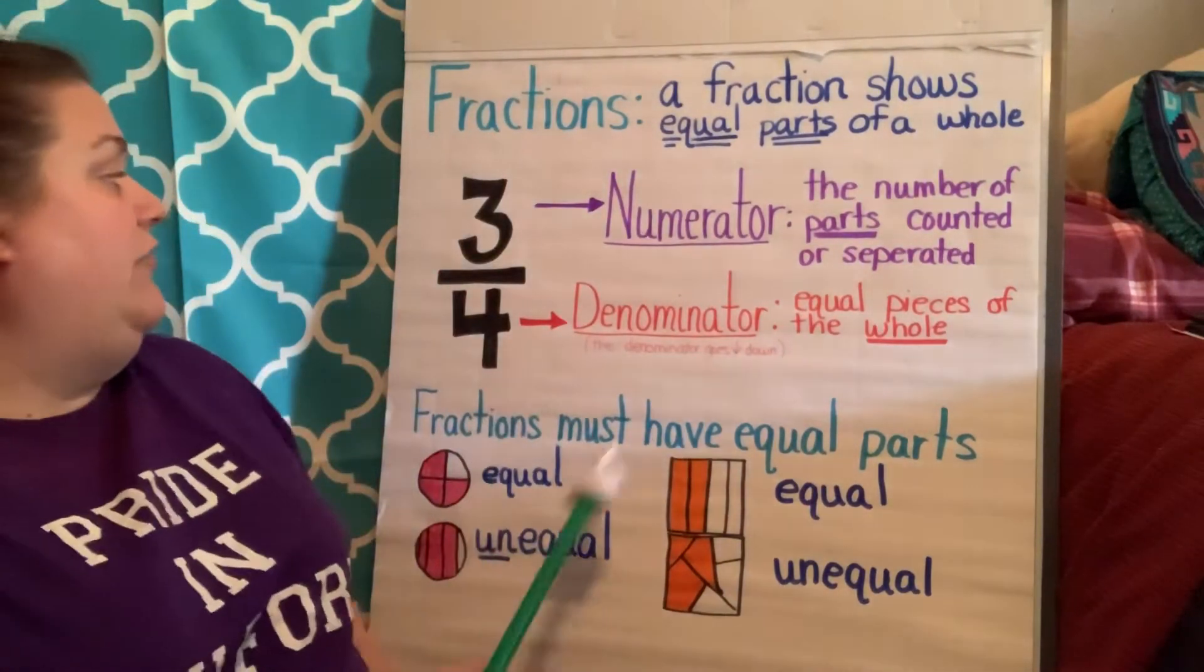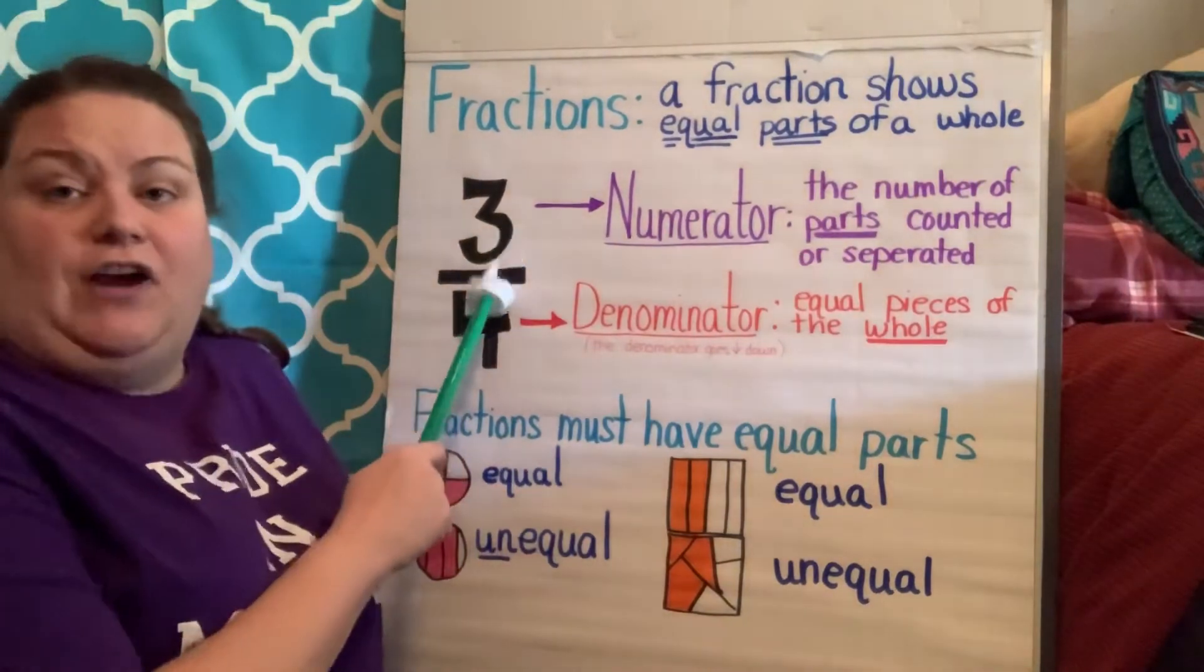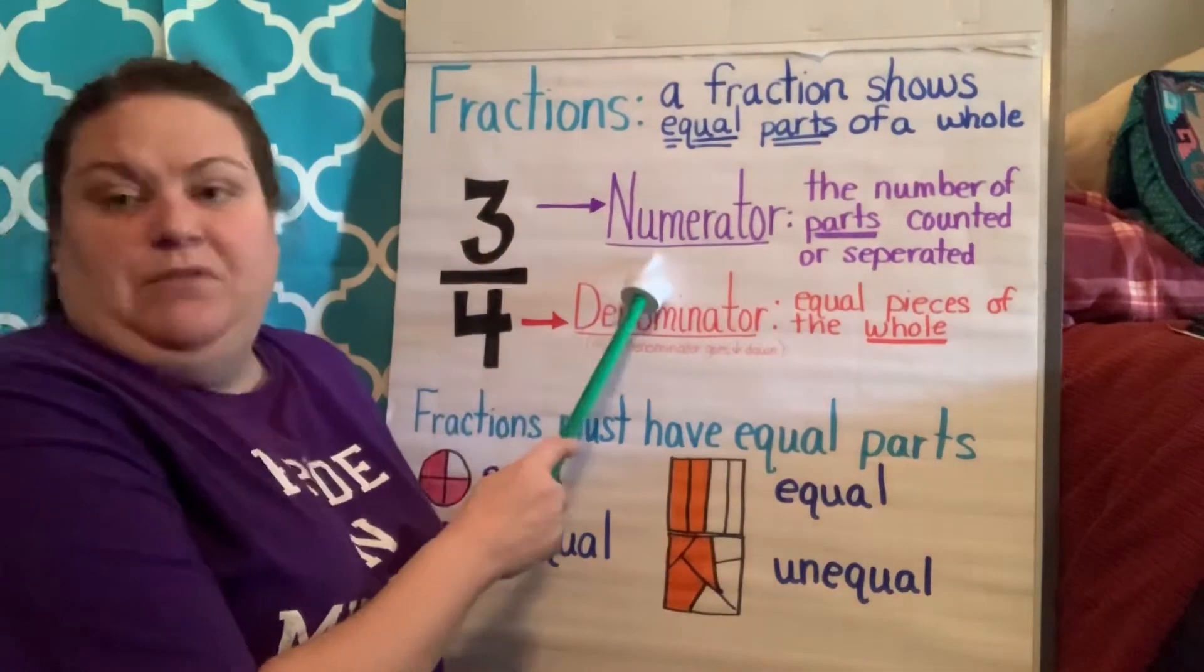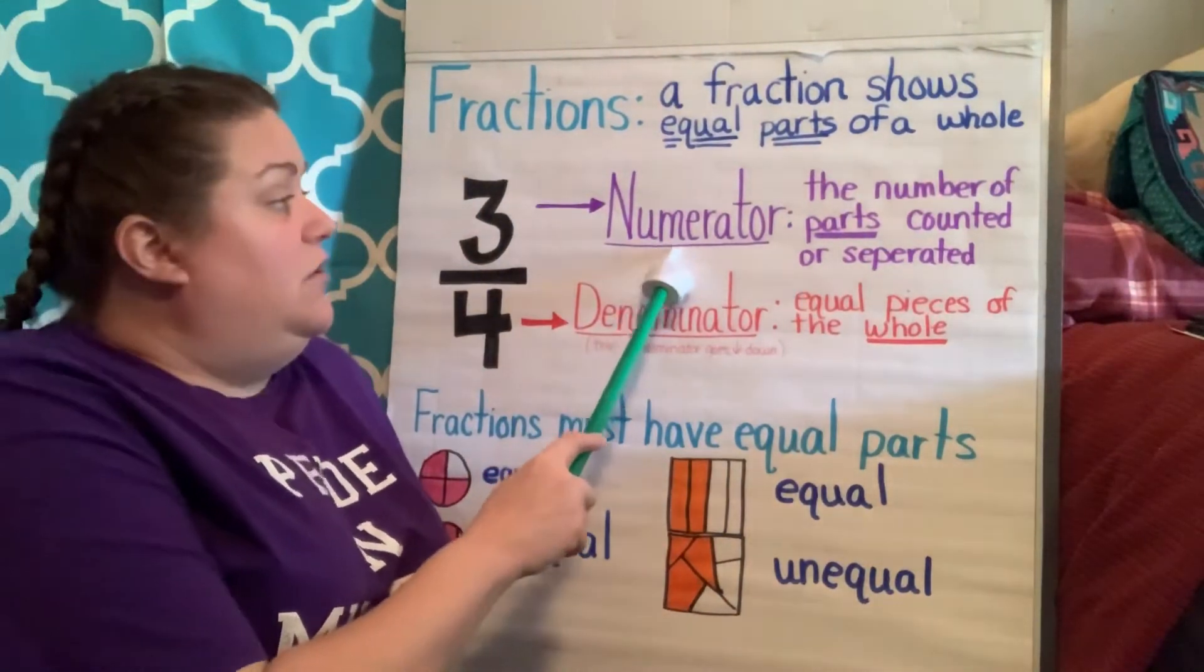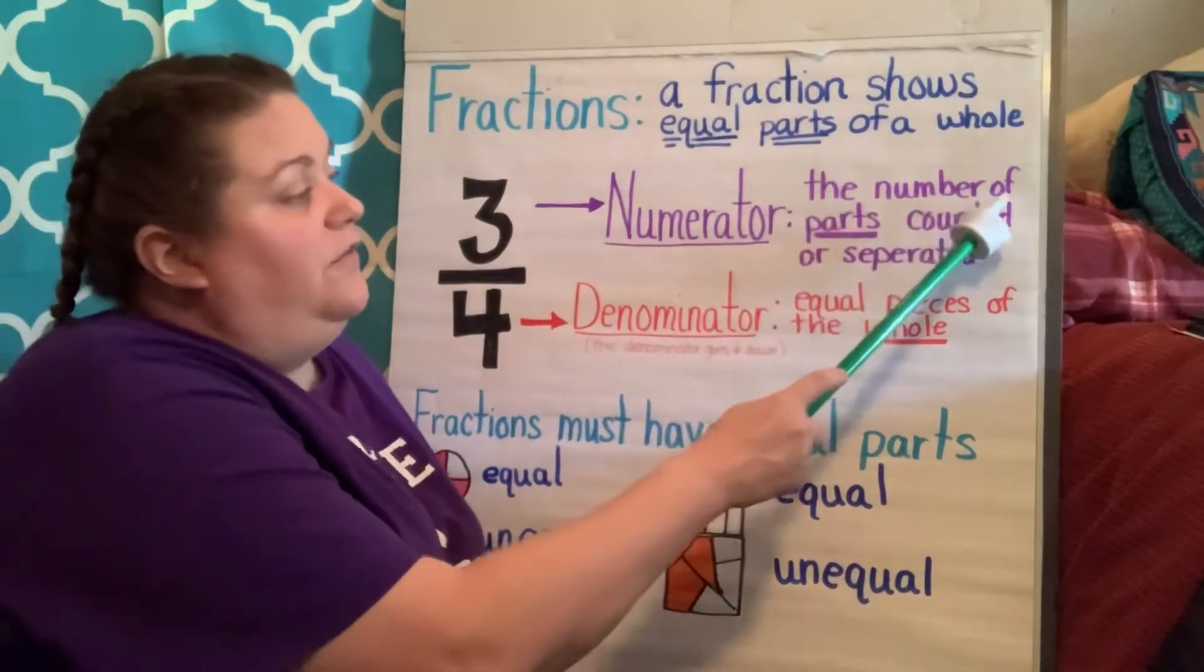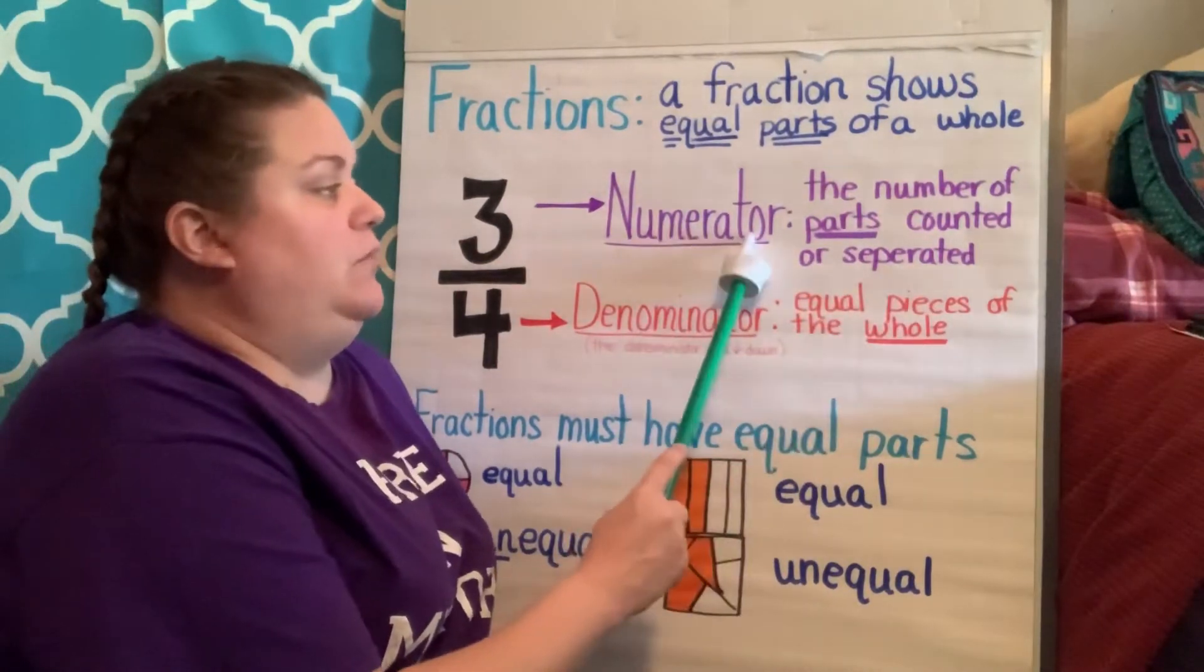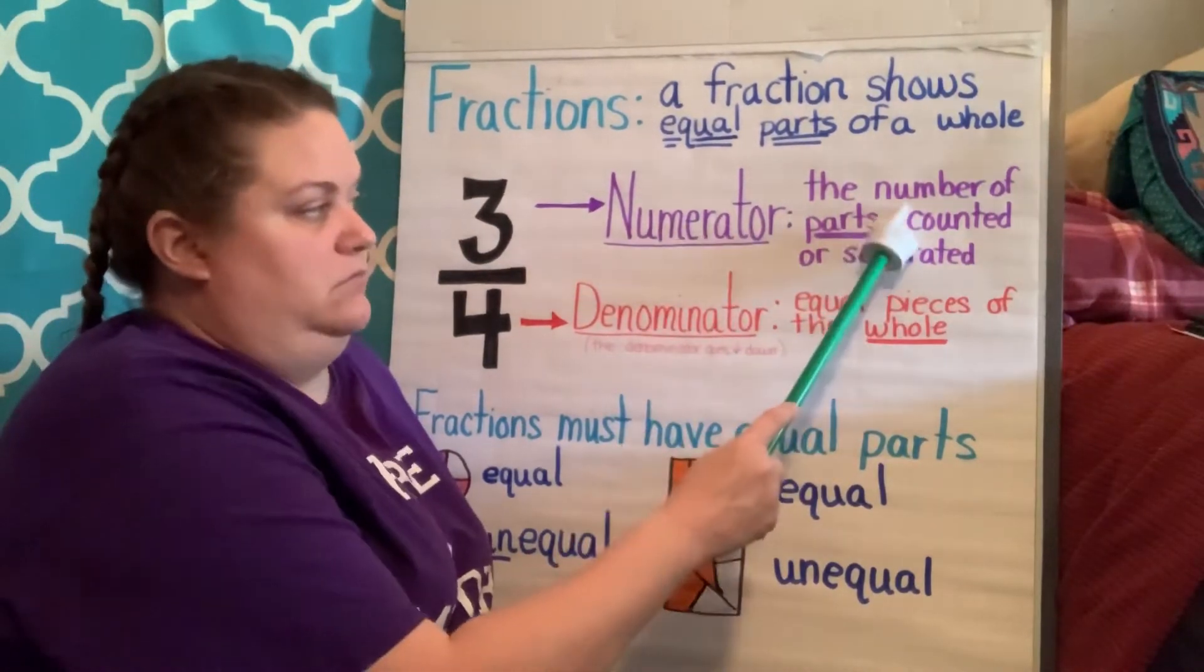So when you're looking at a fraction, you have a number, a fraction line or fraction bar, and then you have another number underneath it. So your top number is going to be your numerator. The numerator is the number of parts counted or separated.